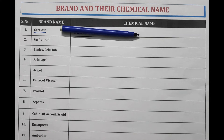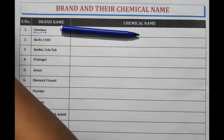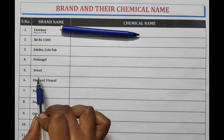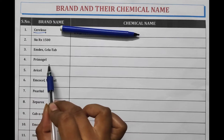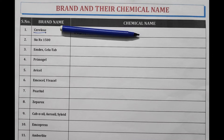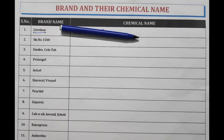These are very important from exam point of view because these types of questions are asked, such as what is the chemical name of Avicel and Primogel. It is very important to remember the brand names and their chemical names. So today I am going to discuss some of the brand names which are considered to be important. Let's start.